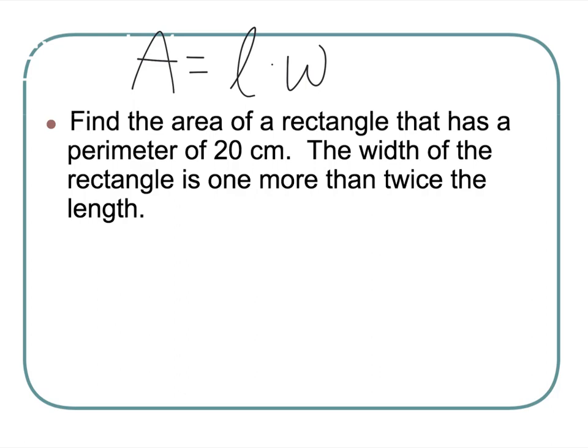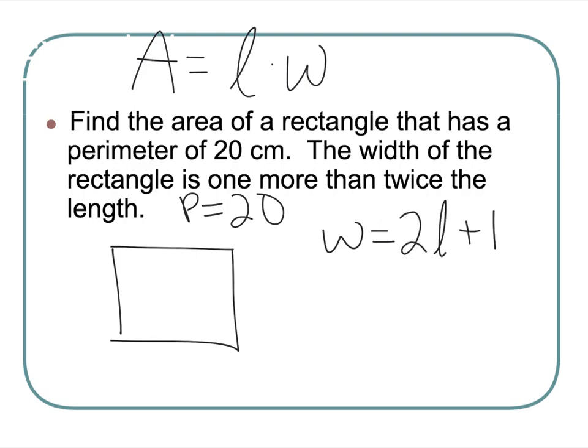Perimeter, I just add all the sides. Let's just draw a quick picture here. We know that the perimeter, P, is equal to 20. Now it says the width is one more than twice the length. W equals one more than twice the length. So two times L plus one, right?